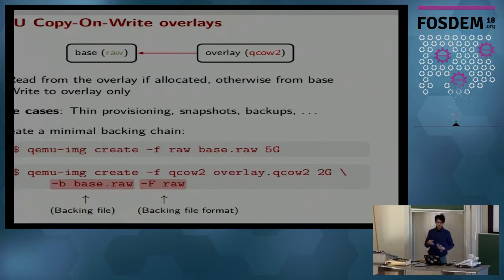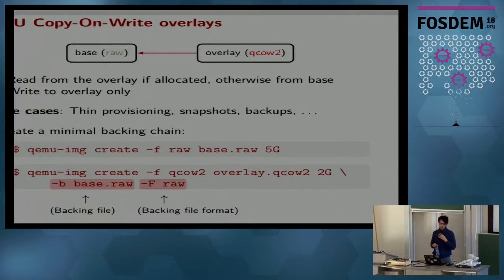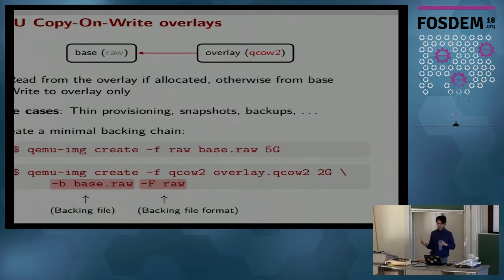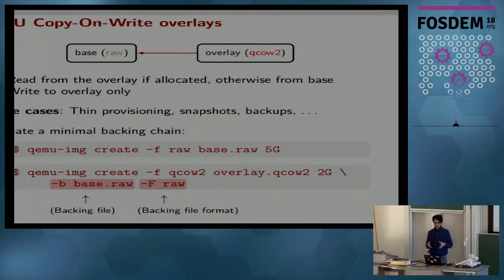To create a minimal backing chain, you use the command lines shown here. The first creates the base image; the second creates the overlay. I especially highlight the base image format and the base image file options. If you don't specify the backing format of a raw image file, QEMU will probe it — and that is a potential CVE waiting to happen. A malicious guest can write a header that looks like QCOW2 and corrupt the image. So it is recommended to explicitly specify the backing file format and the backing file with those options.